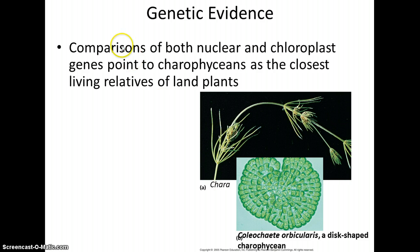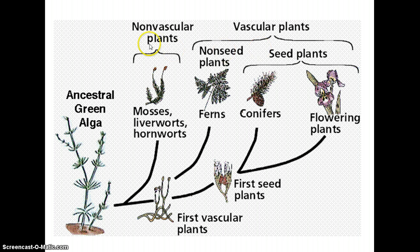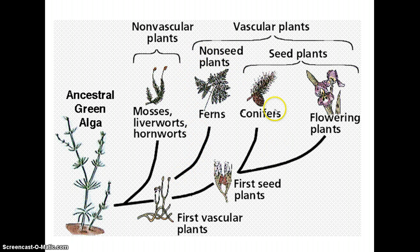Molecular similarities also exist between plants and the charophycians. Here are all the plants: the non-vascular plants, typically called the mosses, although there are other kinds; the vascular plants, which include ferns, gymnosperms, and angiosperms. Within them, the ferns are the non-seed plants, and the gymnosperms and angiosperms have seeds. The flowering plants have evolved fruits and flowers that are unique to them.